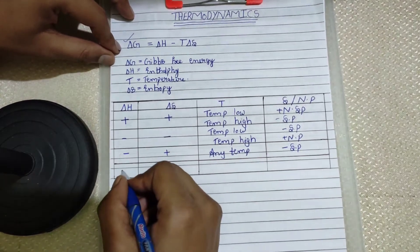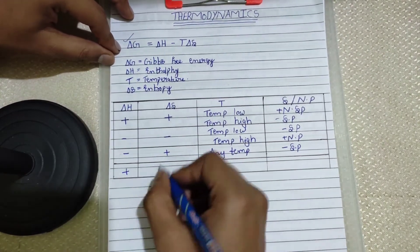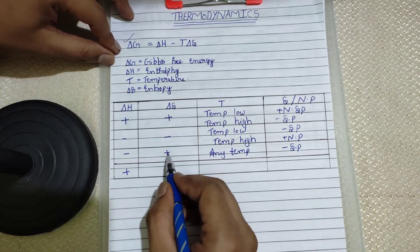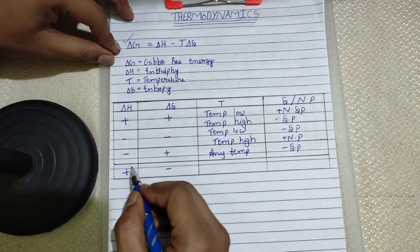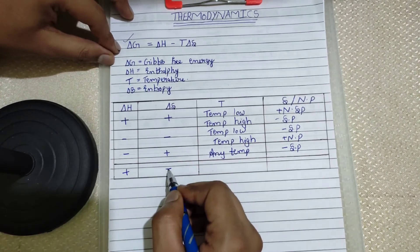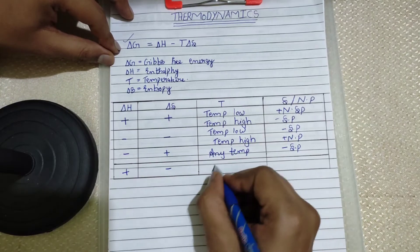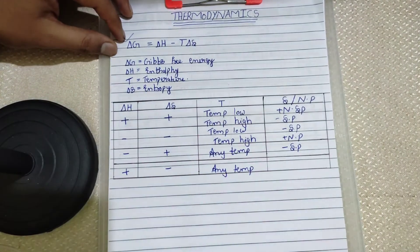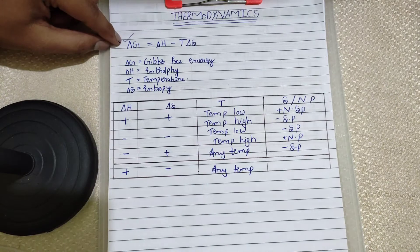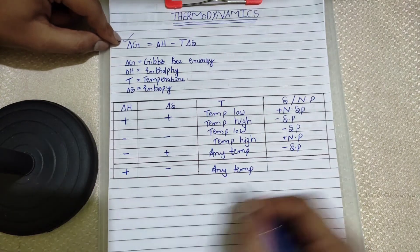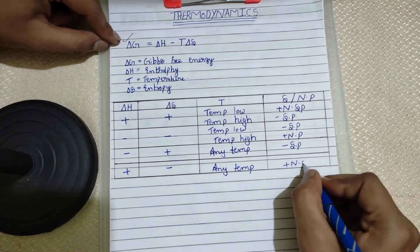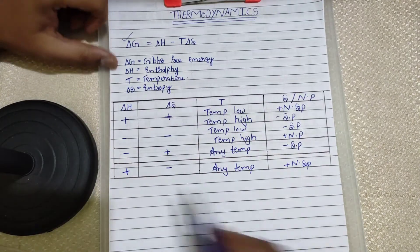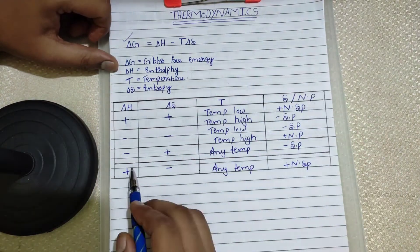The last case: ΔH is positive and ΔS is negative. At any temperature, if you come across this combination, the reaction will be non-spontaneous — because a positive ΔH and a negative ΔS always make ΔG positive regardless of temperature.